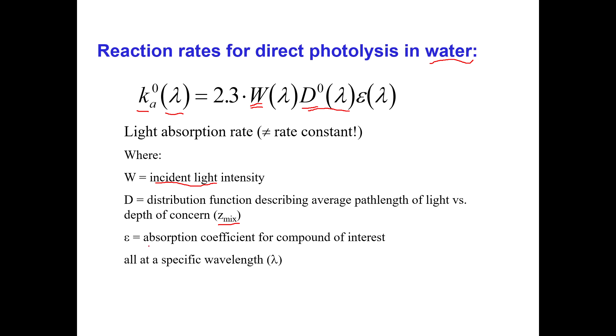And then epsilon here, epsilon is the absorption coefficient for your compound. So this is how much light is coming in, W. This is how much light is being screened out. And then this is how much light is actually being absorbed by your chemical. And all of these things have specific values at different wavelengths.